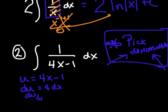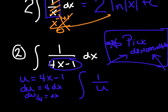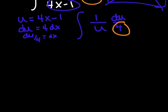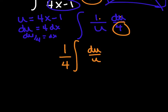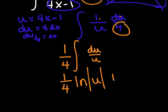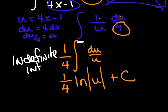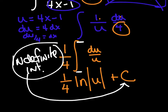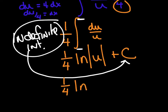My du is 4 dx, so dx equals du over 4. Rewriting: the integral of 1 over u times du over 4. Pull out the 1/4: that's one-fourth the integral of du over u — and that jumps off the page as the derivative of an ln. So I get one-fourth ln of the absolute value of u plus c. Substituting back, the final answer is (1/4) ln|4x − 1| + c.